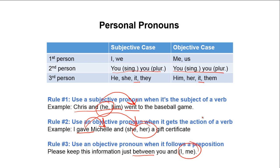A technique I use to recall subjective pronouns is to try forming sentences with them at the beginning. If you can, that pronoun is subjective. For instance: I went to the game, we went to the game, he went to the game, she went to the game, they went to the game — you can start a sentence with those. But you cannot start a sentence with objective pronouns: 'me went to the game,' 'him went to the game,' 'her went to the game.' So if I can start a sentence with a pronoun, it's subjective, and its opposite is objective — like I (subjective) vs. me (objective), we vs. us.